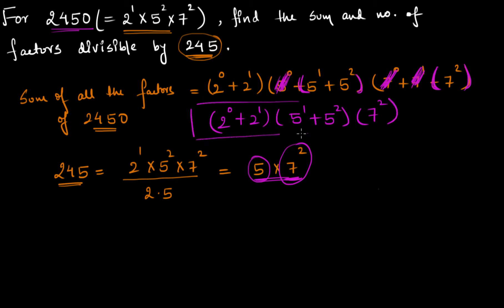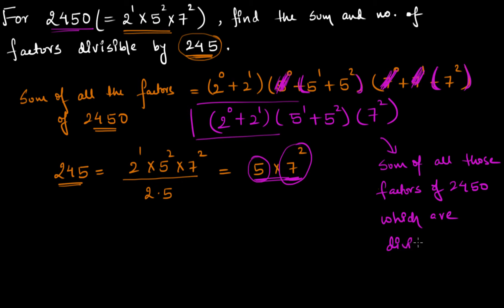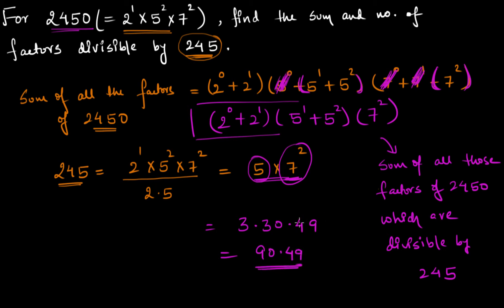The value of this expression represents the sum of all those factors of 2450 which are divisible by 245. Computing: (2^0 + 2^1) = 1 + 2 = 3; (5^1 + 5^2) = 5 + 25 = 30; and 7^2 = 49. So the sum is 3 × 30 × 49 = 90 × 49, which gives us the sum of all factors of 2450 that are divisible by 245.